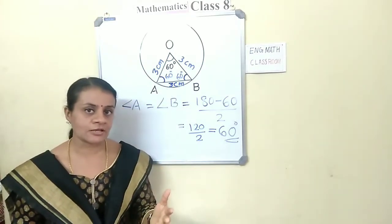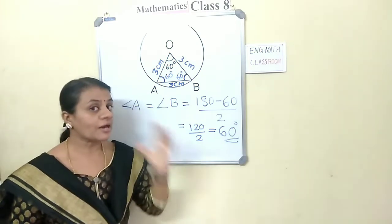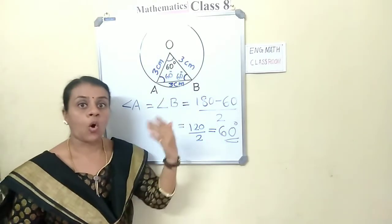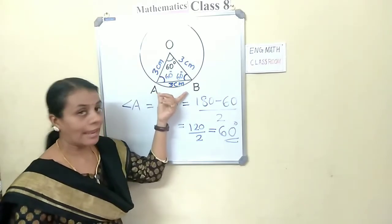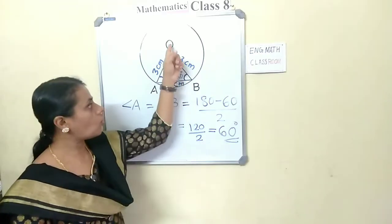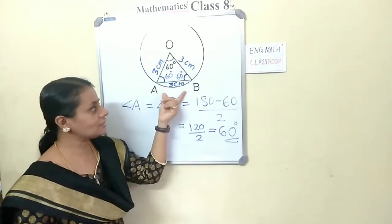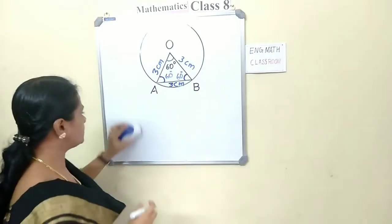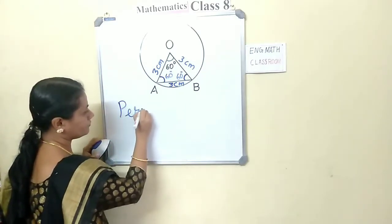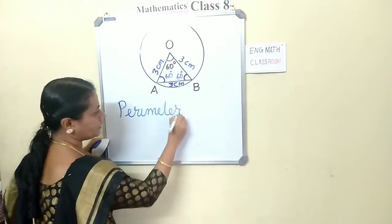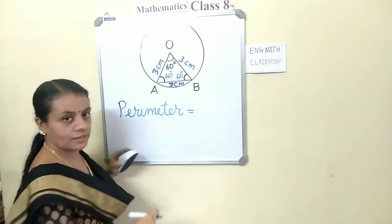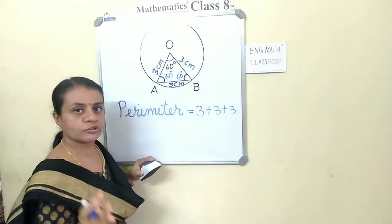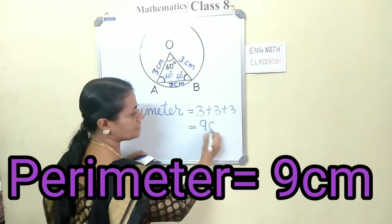Now, what we have to find is the perimeter of triangle AOB. Perimeter means adding all the sides. So we have to add AB plus BO plus OA. AB is 3 cm, so 3 plus 3 plus 3. Perimeter of triangle AOB equals 3 plus 3 plus 3, or 3 multiplied by 3, which equals 9 cm.